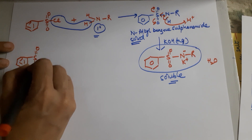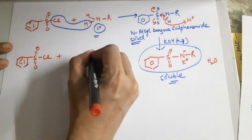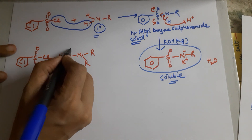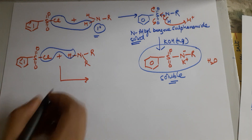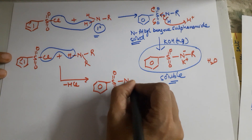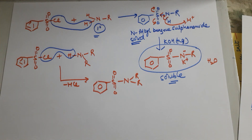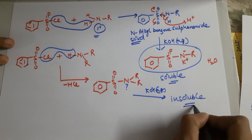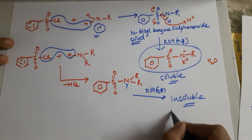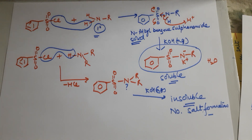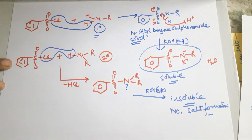Coming to secondary amine: benzene sulfonyl chloride is added to a secondary amine, which has two R groups on nitrogen. H takes away the Cl, so minus HCl happens. You end up with benzene-SO2-NR2. But now there is no H on the nitrogen. So there won't be any salt formation, and even if you add aqueous KOH, the product remains insoluble. This was with 2nd degree amines.